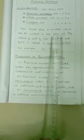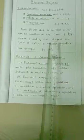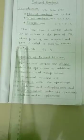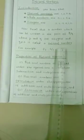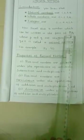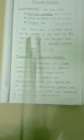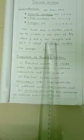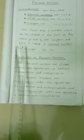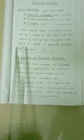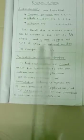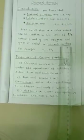Recall that a number which can be written in the form of p by q, where p and q are integers and q is not equal to 0, is called a rational number.